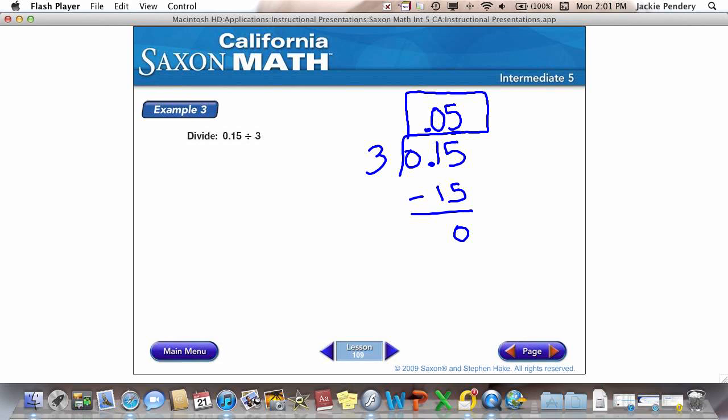Let's try another one with example 4. Divide .0024 divided by 3. We start by taking the decimal straight up.